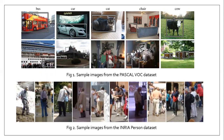Here are some sample images from the datasets used. Sample images shown above are from the Pascal VOC dataset comprising pictures of bus, car, cat, chair, cow, etc. While the images from the INRIA dataset include persons with different poses.